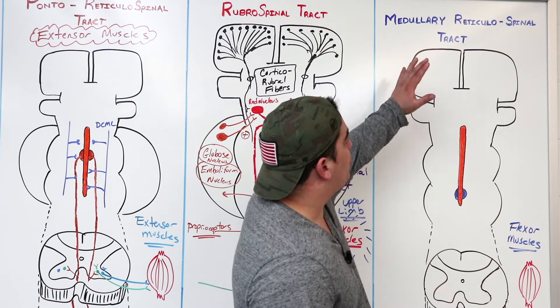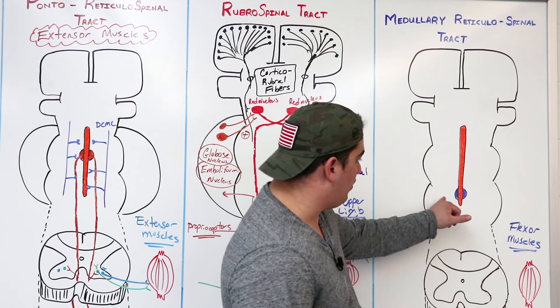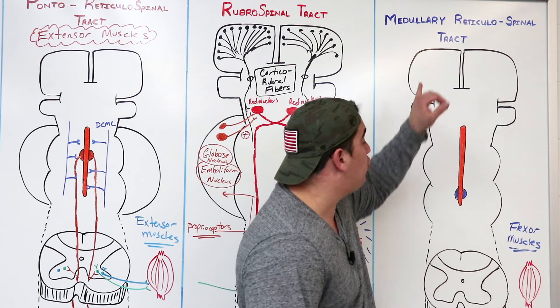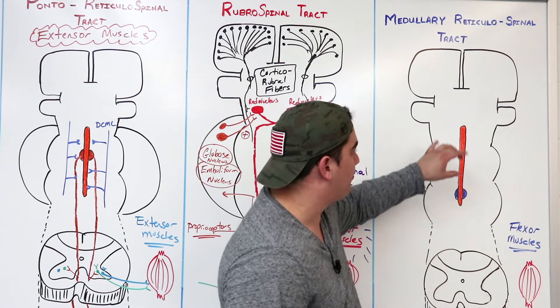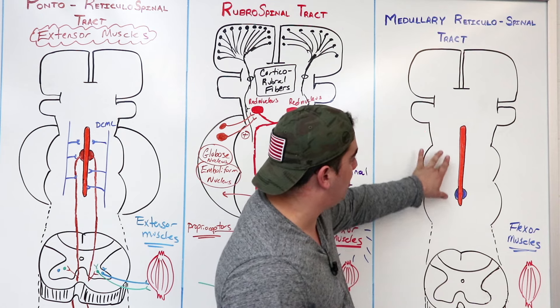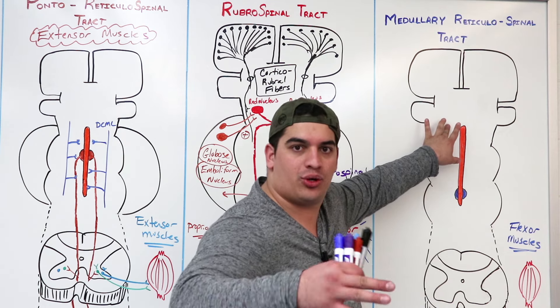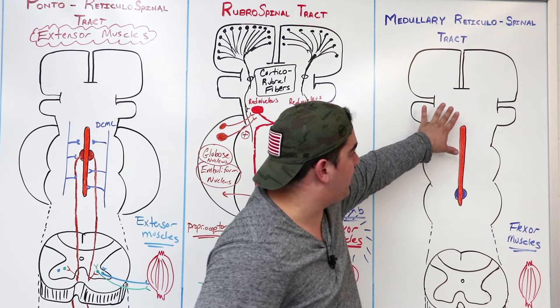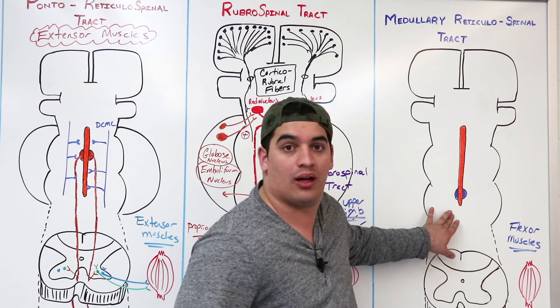So the medullary reticulospinal — where does it originate? It's in the medulla, a part of the reticular formation. This big orange thing here is representing the reticular formation — kind of a mixture of gray and white matter that extends from the midbrain all the way to the medulla.